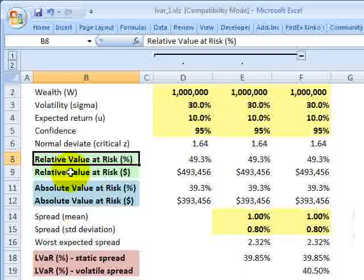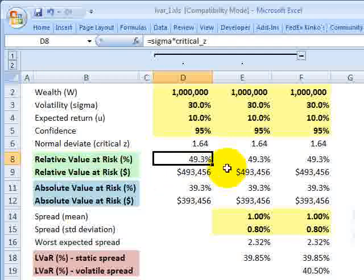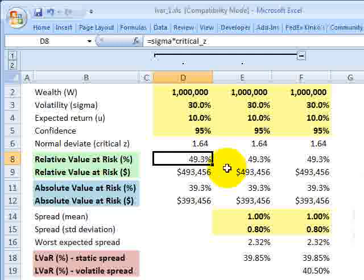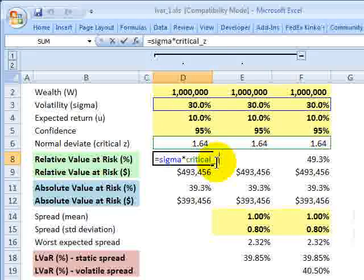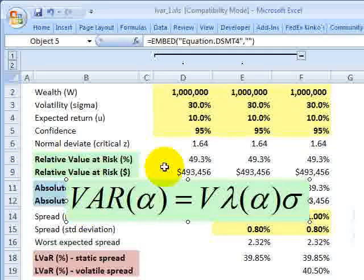And now to get the relative value at risk, a relative VAR, it's very straightforward. In percentage terms, I like to call it the scaled volatility, because all we're doing is multiplying the volatility, that's our sigma, of 30% times the critical Z or normal deviate.